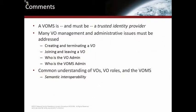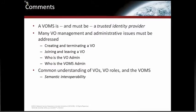The VOMS is actually acting as a trusted identity provider — by transforming users' native identities to their role identity, it is acting in the capacity of an identity provider. For this demo, we are working out a number of administrative issues: how do you create or terminate a VO, who gets to join and leave, who gets to be the VO administrator or the VOMS administrator? We did all this by hand for the demo, but these are not insurmountable problems. Also there is a semantic interoperability problem: what is the scope of a particular VO, what are the meanings of the VO roles, and what is the protocol for talking to the VOMS — all those things would have to be commonly understood across all participants.